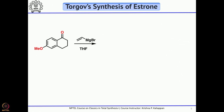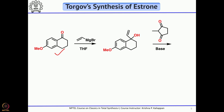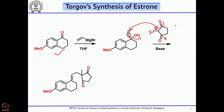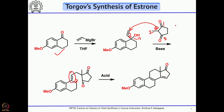Targo started with the readily preparable starting material 6-methoxy-1-tetralone. Addition of a vinyl Grignard reagent gave the tertiary allylic alcohol. He then treated this with 2-methylcyclopentane-1,3-dione in the presence of base — Triton B was used. This undergoes a substitution reaction, and what he got was the product containing the new double bond.